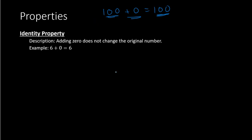In math notation, we can replace the number 6 with the letter A, where A can be representing any number. So here we have A plus 0 equals A. And that is the way we can express this property in math notation.